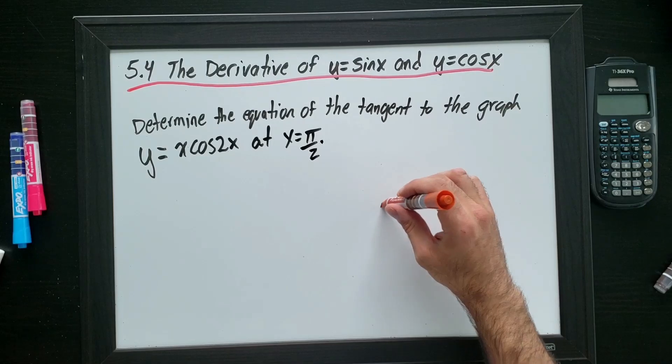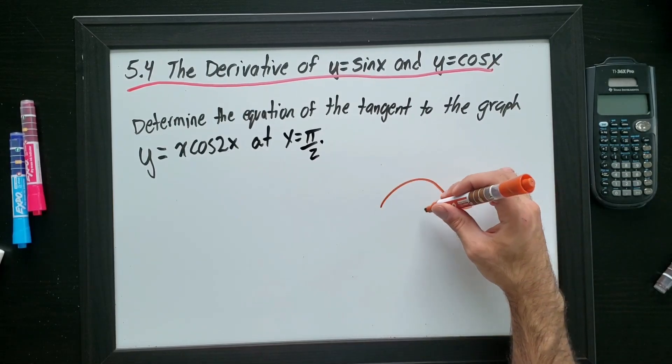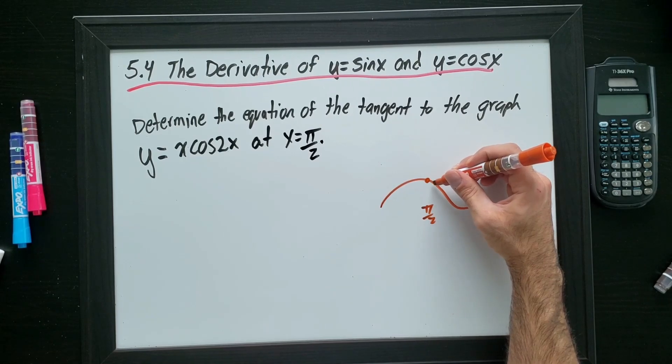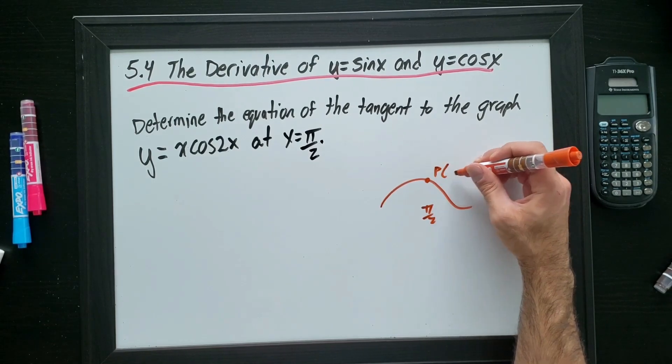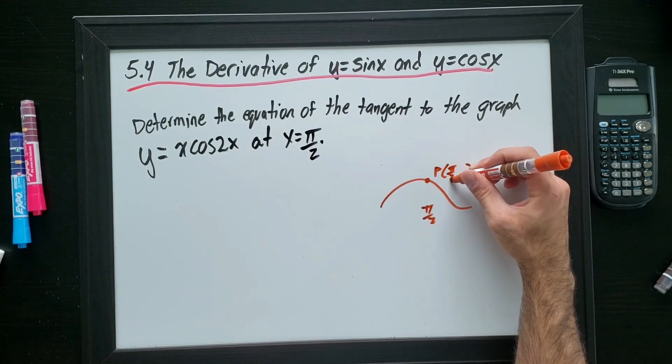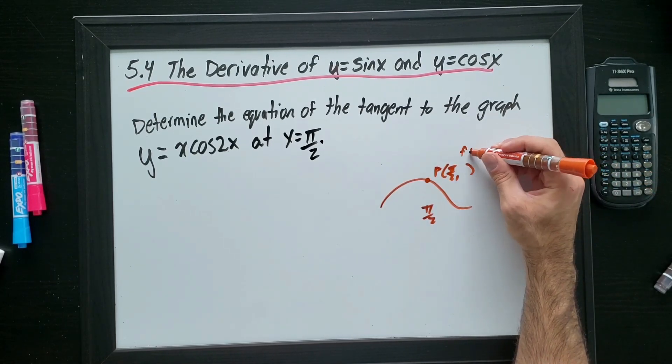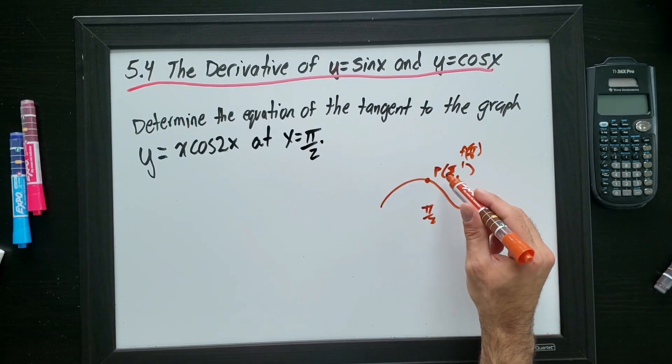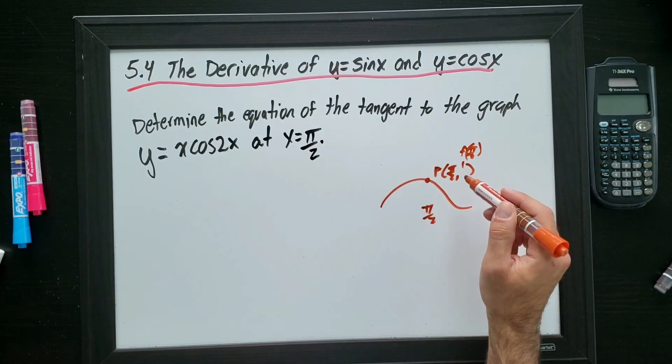Because wherever this is, however this function looks, I need to know that if it's at pi over 2, I want to find what the y value is at pi over 2. So I know that this point of tangency, pi over 2 and f at pi over 2, it's too small in there. f at pi over 2 is going to come in handy when I have to find that equation of the line.